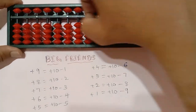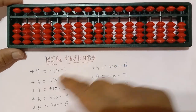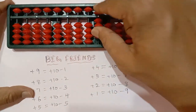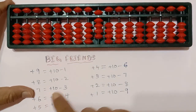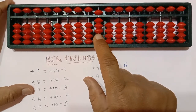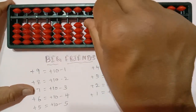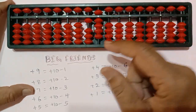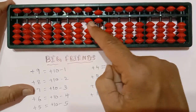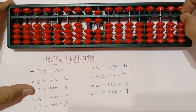Now let us say 9 plus 7. So we have to add 7 here. To add 7, what we have to do? We have to add 10 and we have to minus 3. So this is the way how to do.